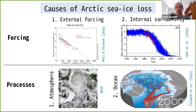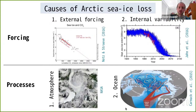We can look at the causes of Arctic sea ice loss not only in terms of forcing, but also in terms of processes, which we often classify as atmospheric or oceanic. On the left is an example of the great Arctic cyclone of 2012, which had a big impact — in September 2012 you had a record low sea ice area. On the right, you have the ocean circulation in the Arctic, and that is the focus of this presentation.